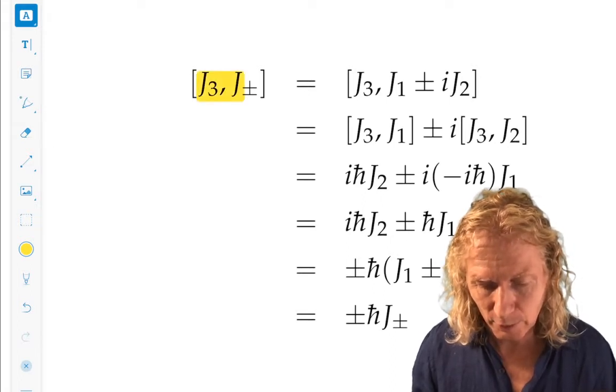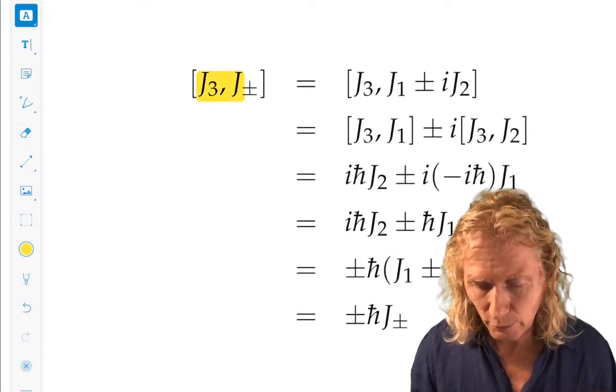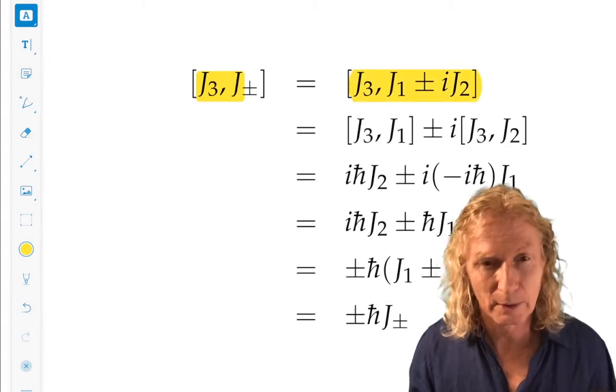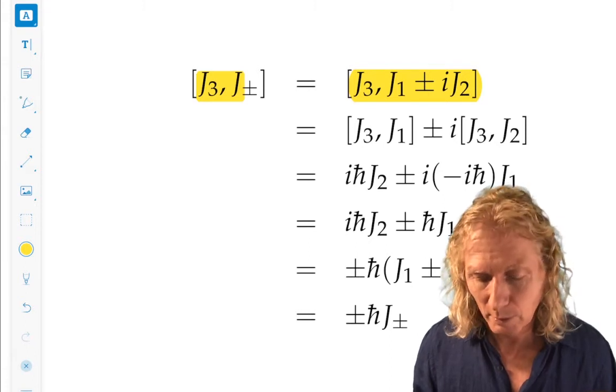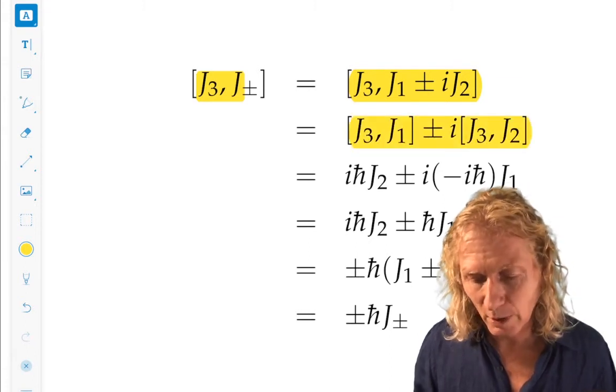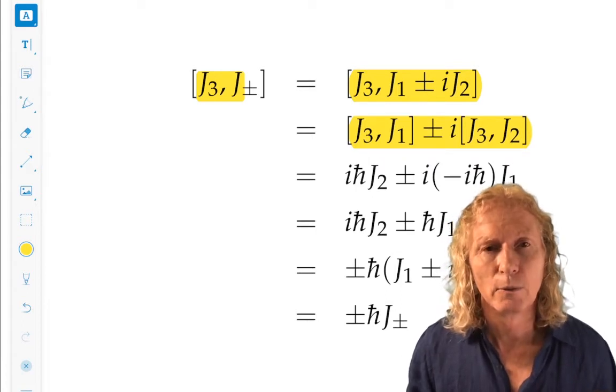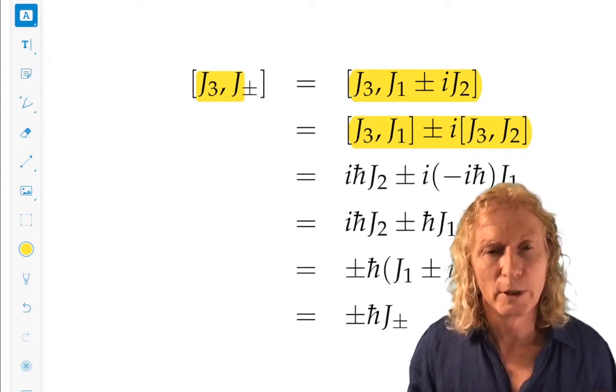The commutator j3 with definitions for j-plus and j-minus, use linearity, the fact that constants can be pulled out, and then what you know about the commutation relation for j1, j2, and j3.